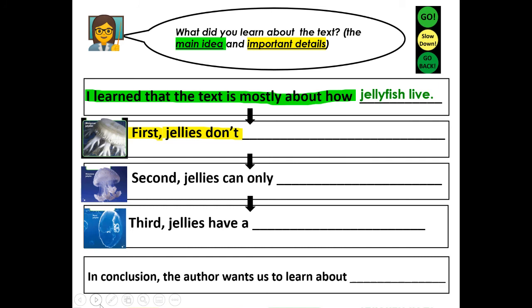Now that you're done with your first detail sentence, we're going to move on to our second detail. Second, jellies can only — what can jellies only do? Say your sentence and then write it. Push pause, write your second detail sentence, and when you're ready to join us, push play.